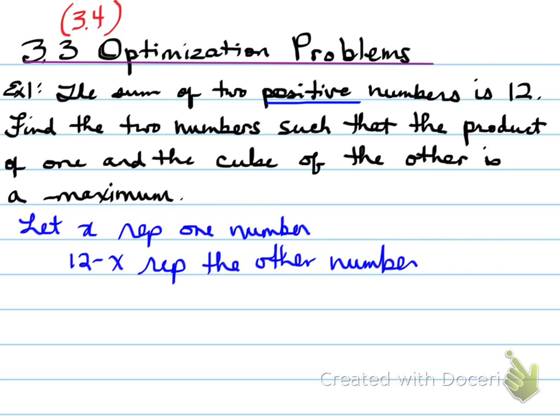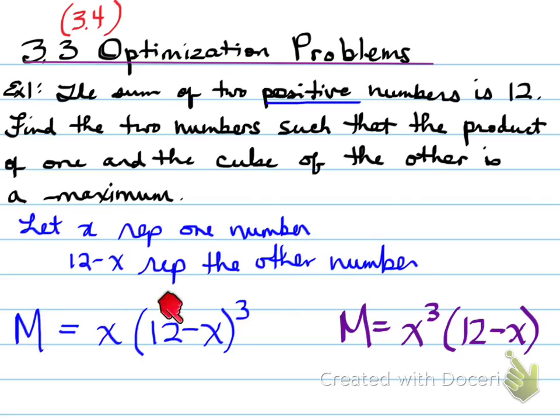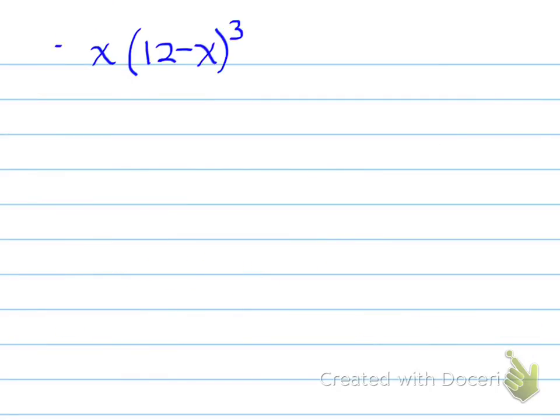Alright, now we need to know that the product of one and the cube of the other is a maximum. So, we're taking the product of one, so x times the cube of the other to give us the maximum. The other way to write this is if we cube the x and take 12 minus x is the other. So, the goal here, whether we use this form or this form, is to answer this question. So, we need a maximum, so I use a capital M to imply a maximum.